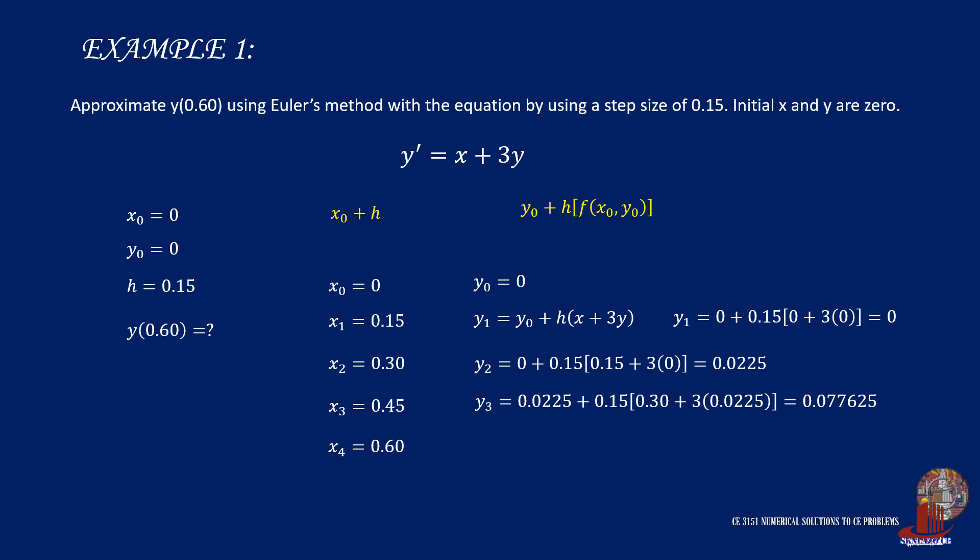Similarly, y3 results in 0.077625. y4 will be 0.077625 plus 0.15 times the quantity of 0.45 plus 3 times 0.077625, which gives 0.180056. This is the value we are tasked to find, the value of y when x is 0.60.